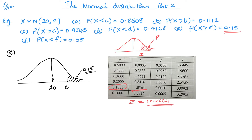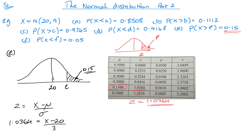Notice that this is slightly more accurate than the main tables — the main tables give z to two decimal places, which would round to 1.04 here, whereas this table gives z to four decimal places. Using z = (x − mean) / standard deviation: 1.0364 = (x − 20) / 3, giving x = 23.1092, which I'll round to two decimal places as with the previous answers.